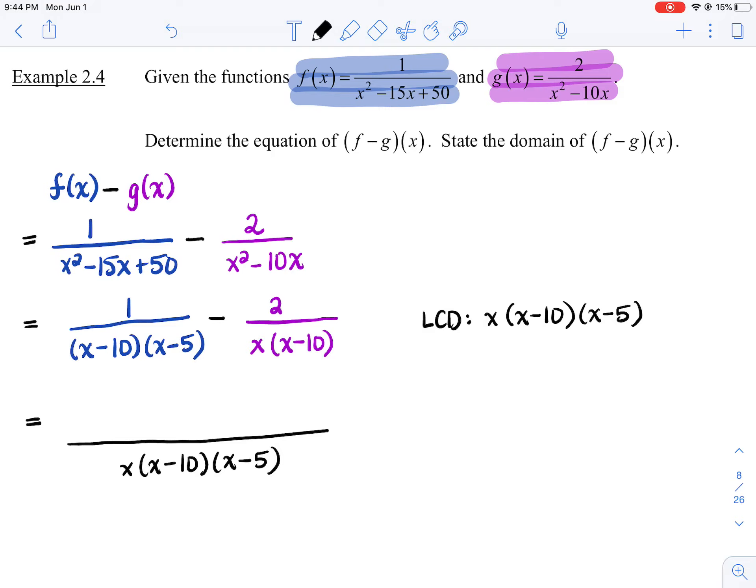All right, and now you just got to figure out what you need to multiply each fraction by, both top and bottom, so that you get that LCD. So for the first fraction that I have in blue, the f at x, I've got the x minus 10, I've got the x minus 5, I'm just missing the x. So that means I'm going to multiply top and bottom by x. So x times 1 gives me x.